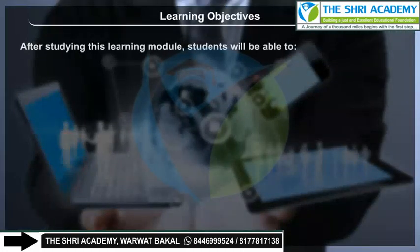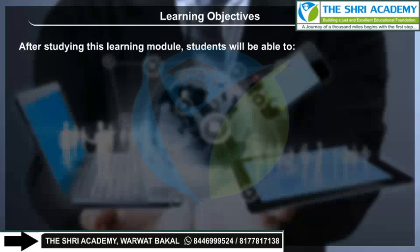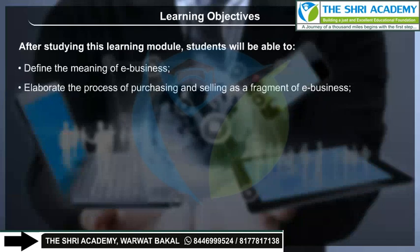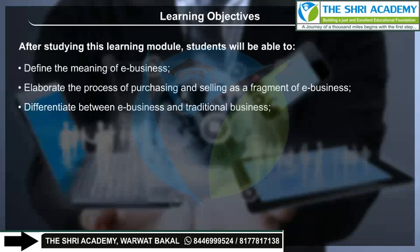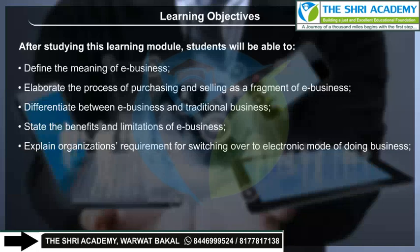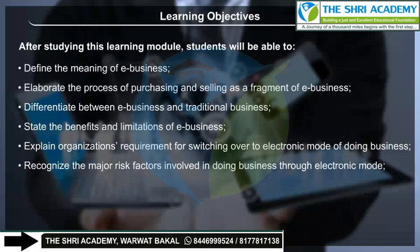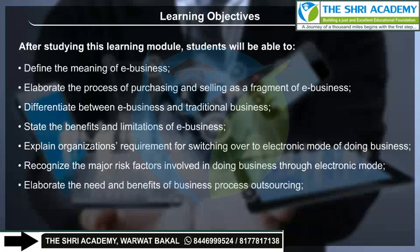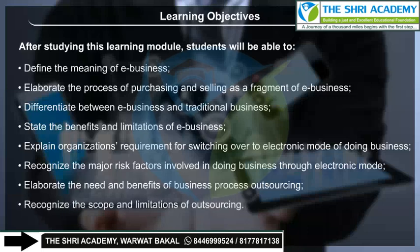Learning Objectives: After studying this learning module, students will be able to define the meaning of e-business, elaborate the process of purchasing and selling as a fragment of e-business, differentiate between e-business and traditional business, state the benefits and limitations of e-business, explain an organization's requirement for switching over to electronic mode of doing business, and elaborate the need and benefits of business process outsourcing.